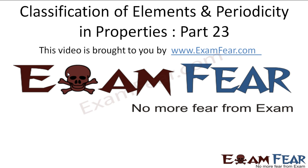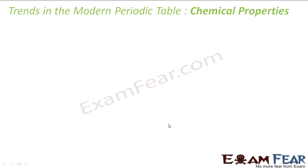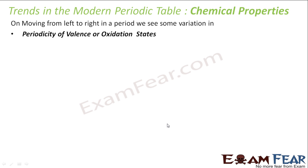Hello friends, this video on classification of elements part 23 is brought to you by examfear.com, no more fear from exam. Before watching the video, please make sure that you have watched part 1 to part 22. Let's talk about trends in the modern periodic table for the chemical properties. If you move from left to right or top to bottom, we see variations in the oxidation states and the anomalous properties of second period elements. We'll explain both of these.